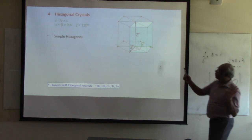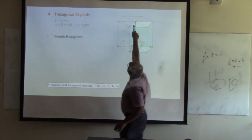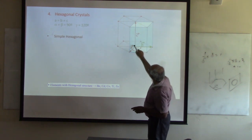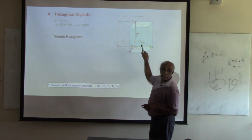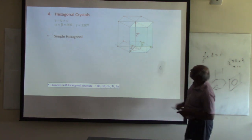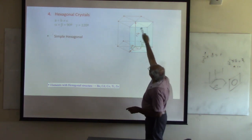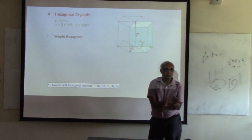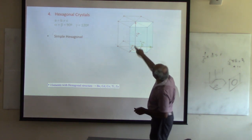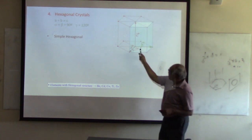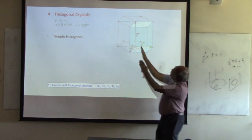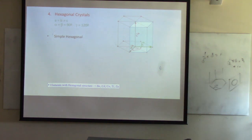For hexagonal, two lattice parameters are equal but one is different, and two angles are 90 degrees while this angle is 120 degrees. The unit cell — the smallest cell you can translate to make the entire crystal — has that 120-degree angle. I will give homework asking you to calculate some properties of this hexagonal structure.